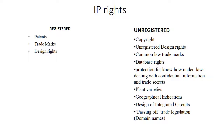IP rights can be classified into registered and unregistered. Registered includes patent, trademark, and design rights. Unregistered includes copyright, unregistered design rights, common law trademark, database rights, protection of know-how, trade laws dealing with confidential information and trade secrets, plant varieties, GIs, design and integrated circuits, and passing-off trade legislations such as domain names.